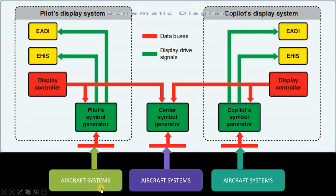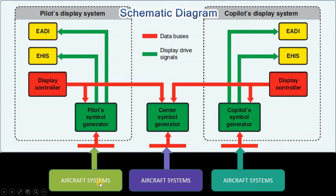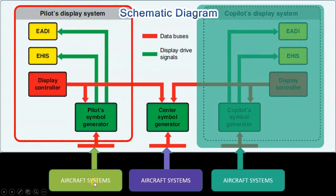Moving forward, we have a schematic diagram showing how the Electronic Flight Instrument System works. In this system, different aircraft systems provide information to the pilot symbol generators. The pilot symbol generators are related to both the EADI and EHSI, and display controllers — which are common — control the display of the EADI and EHSI.